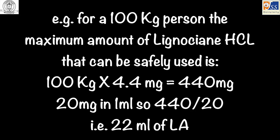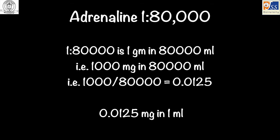For example, for a 100 kg person the dosage is calculated as shown. 1:80,000 adrenaline means 1,000 mg in 80,000 milliliters, so each milliliter contains 0.0125 mg of adrenaline.